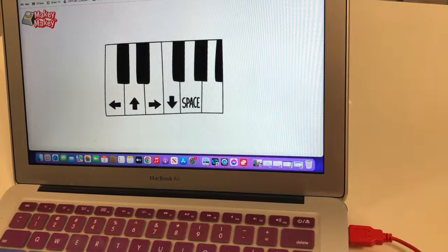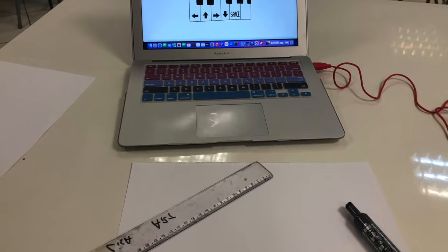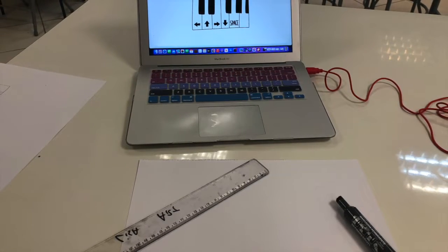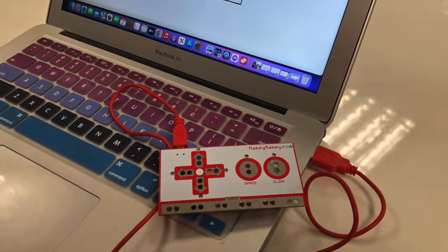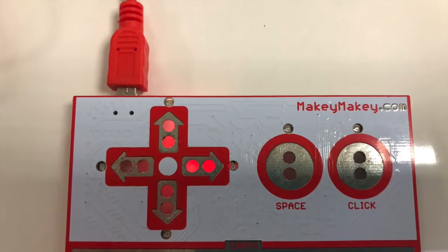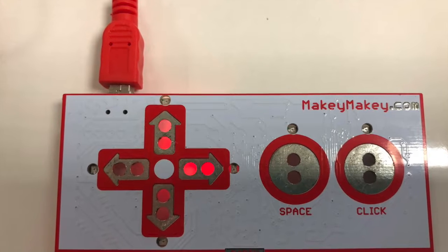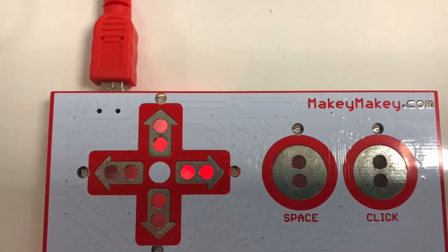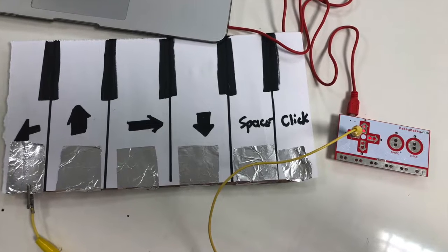Next, we need to connect our USB cord to the computer as well as to our circuit board. Once that's done, make sure your circuit board is lit up so that it's making the connection properly, and we're going to use the arrows on the circuit board.